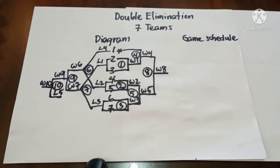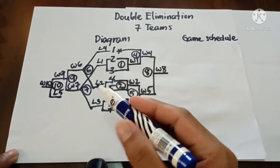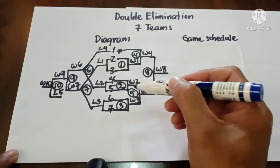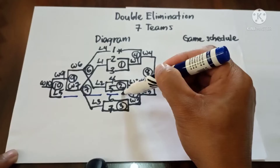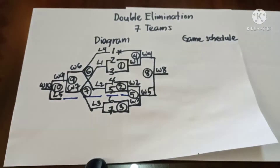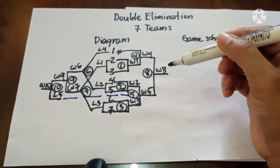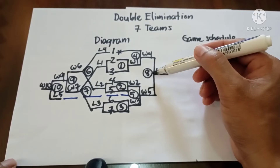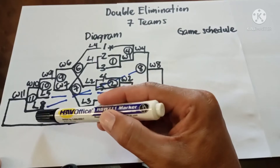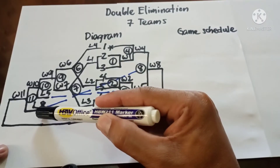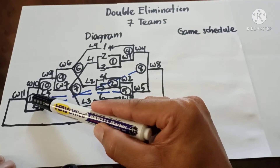Don't forget to draw the broken line for Loser 5, coming from Game 5. Now we have one remaining concern: Loser 8. Loser 8 must be placed against Winner 10 in Game 11.